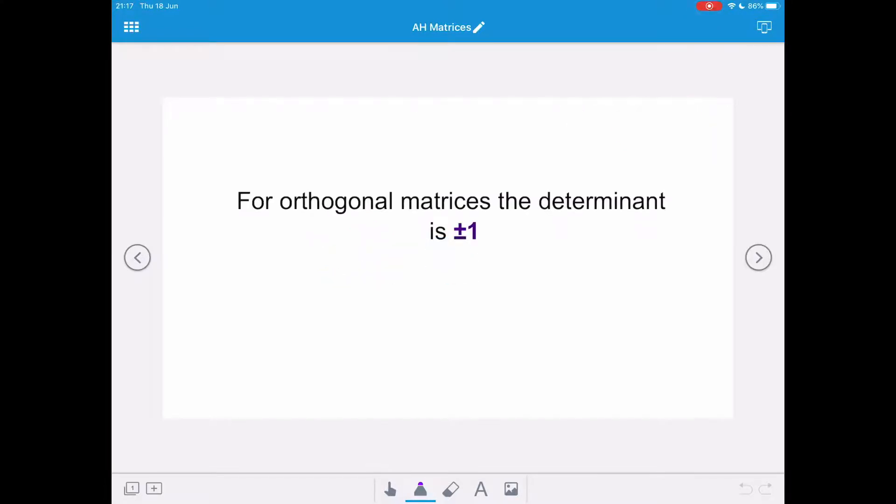Now, remembering back to our properties of orthogonal matrices, an orthogonal matrix was one where the transpose of the matrix could be pre- or post-multiplied to get the identity matrix. So the determinant of an orthogonal matrix is either plus 1 or minus 1, and we can use this property to determine values missing from a matrix.